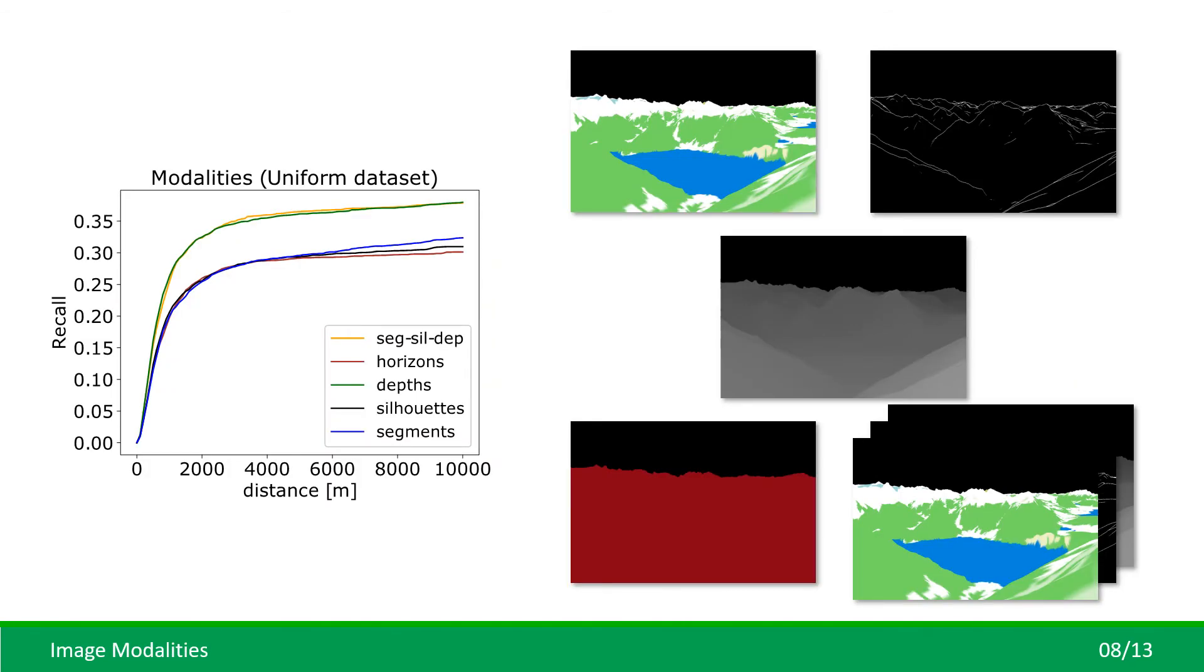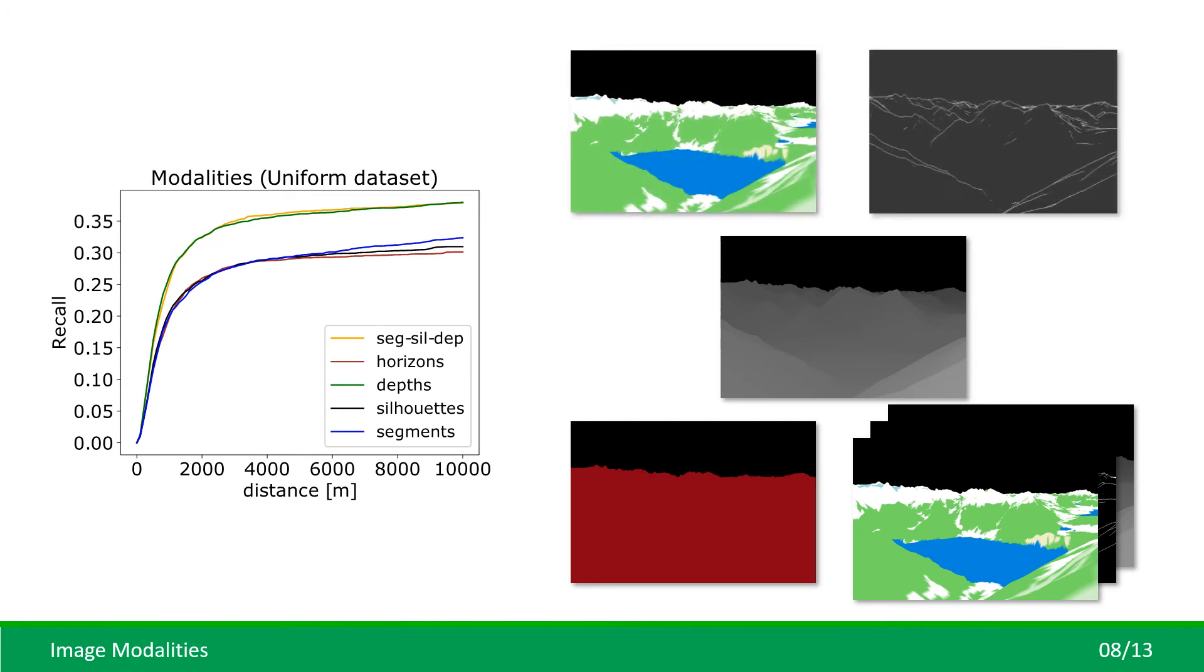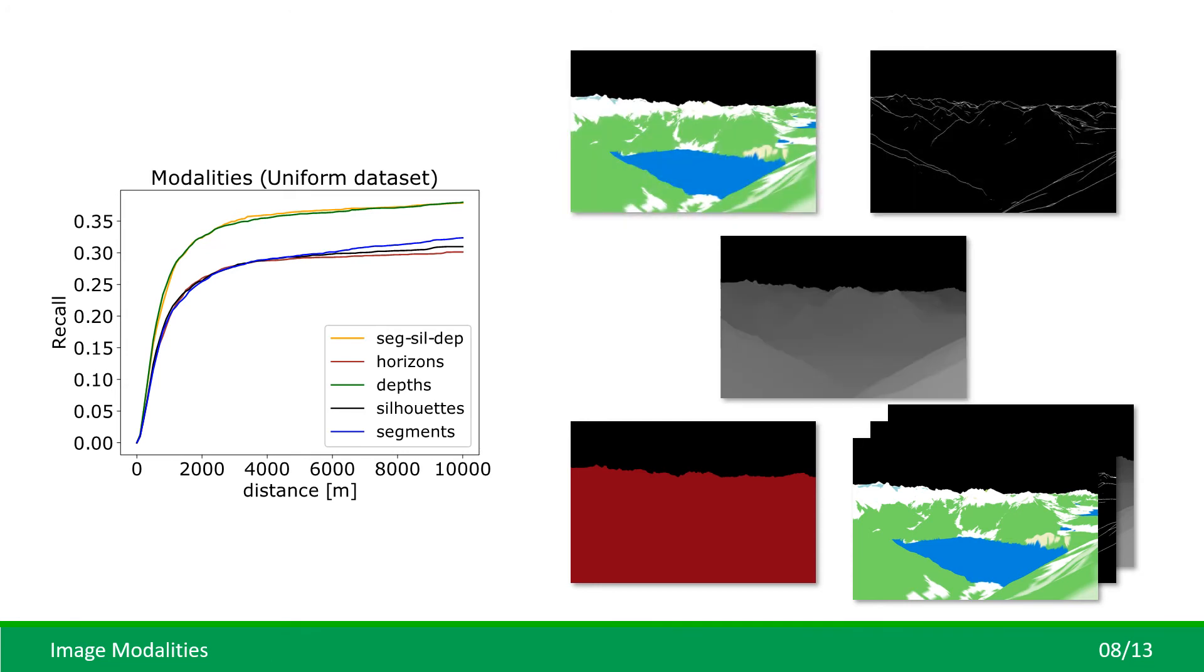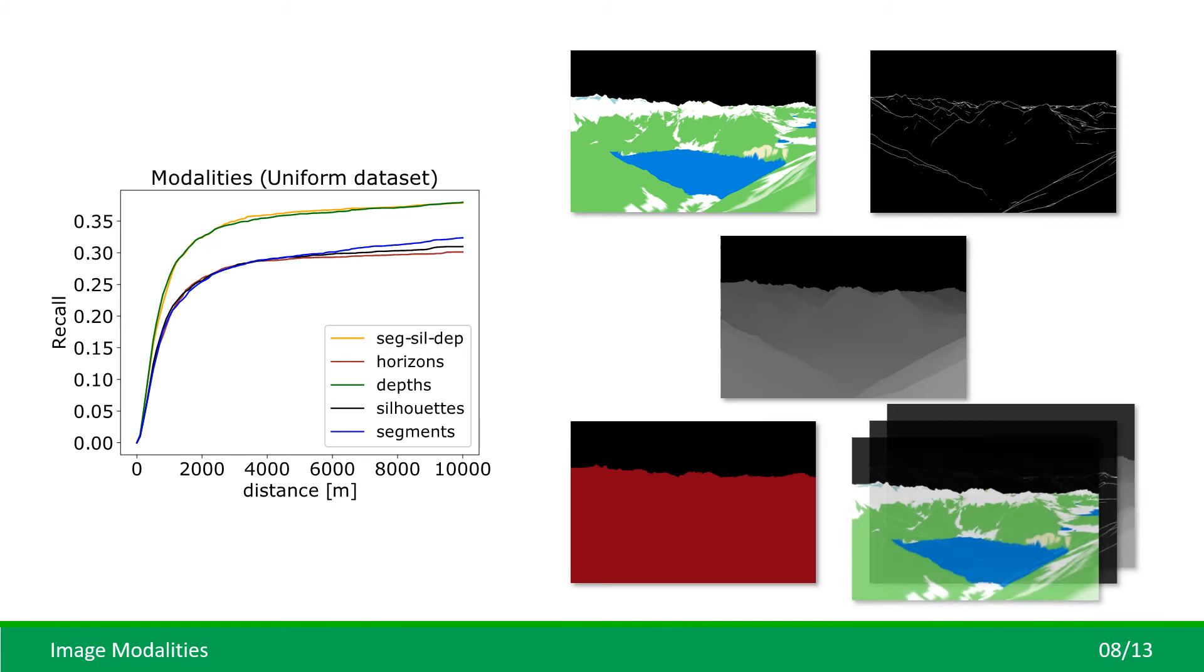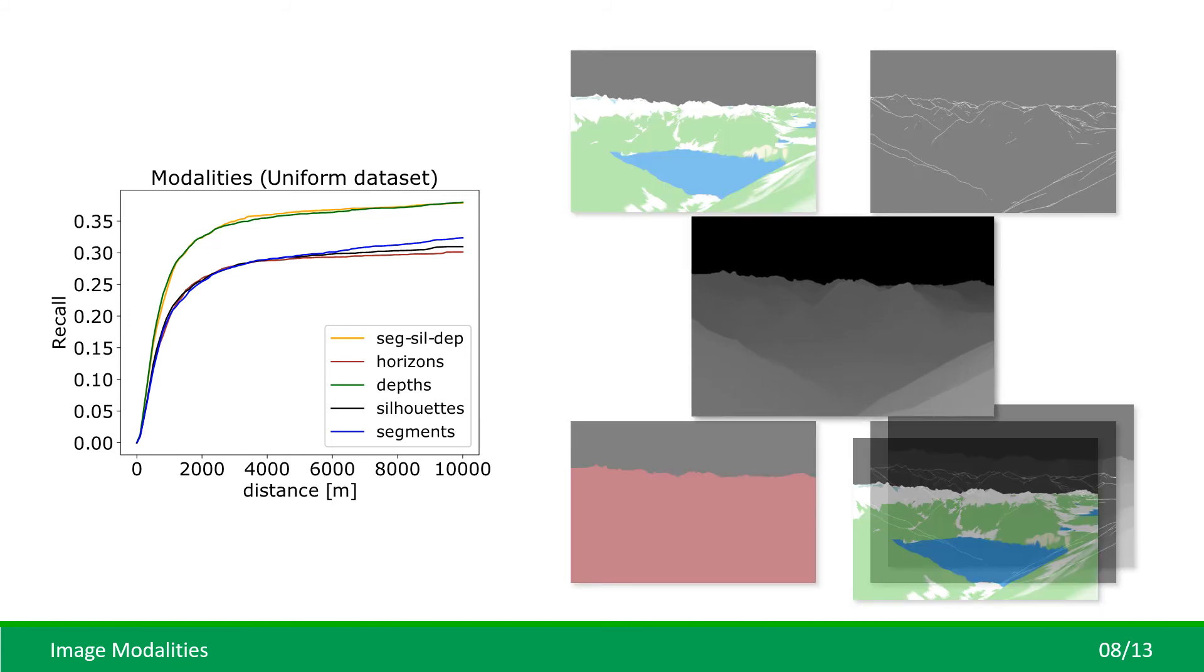We used our new datasets and localization method to assess the localization potential of the individual database image modalities. Besides semantic segmentations, silhouette maps and depth maps, we measured the performance for previously used horizon lines and for the combination of the modalities. We revealed the depth information to be the most important one by a significant margin and to be robust enough on its own.